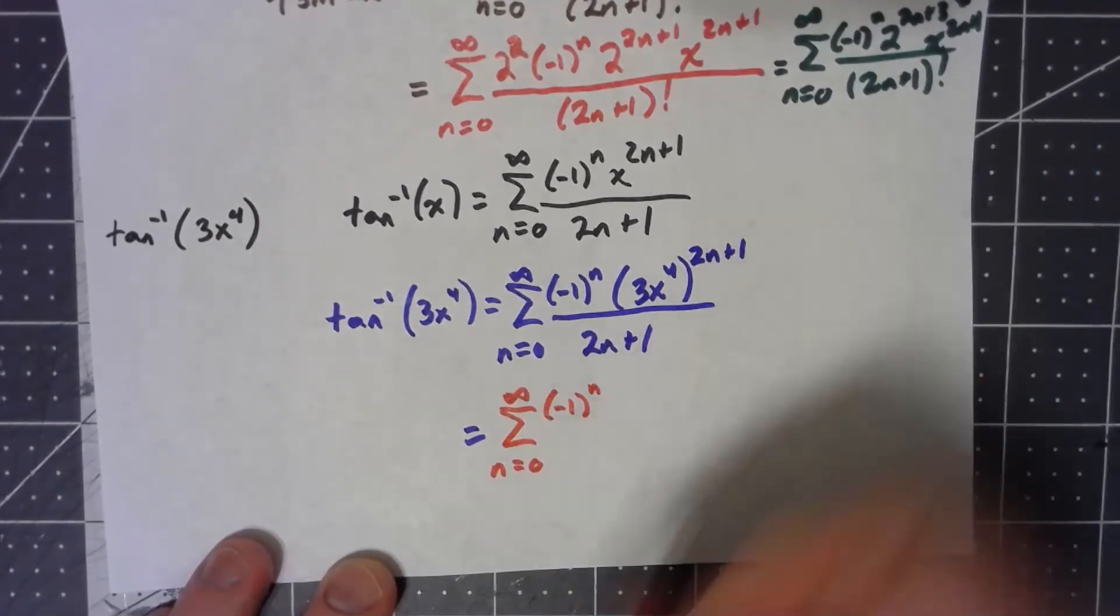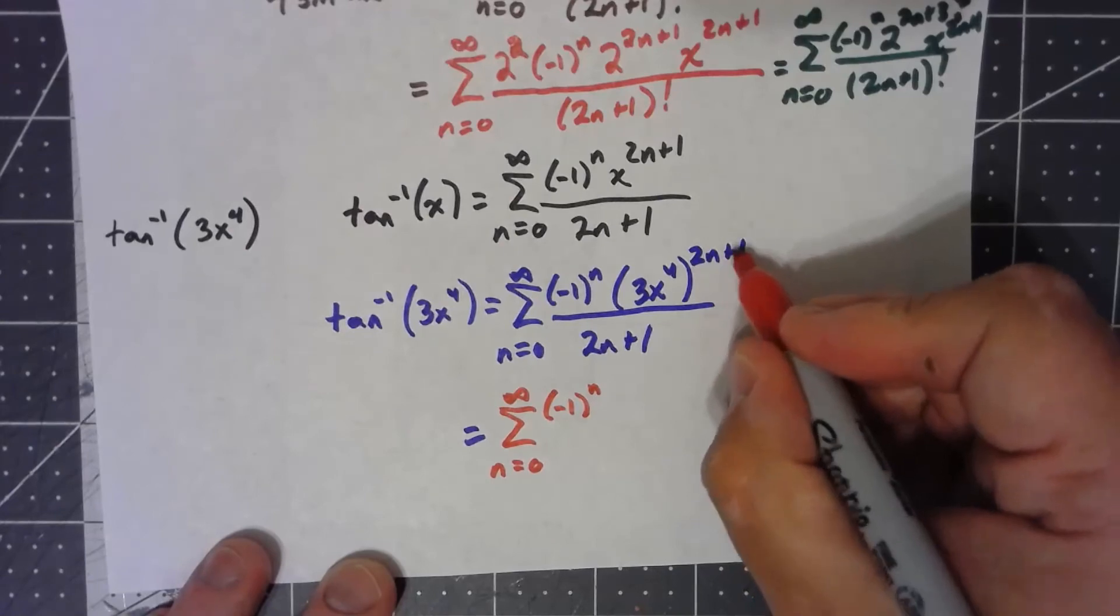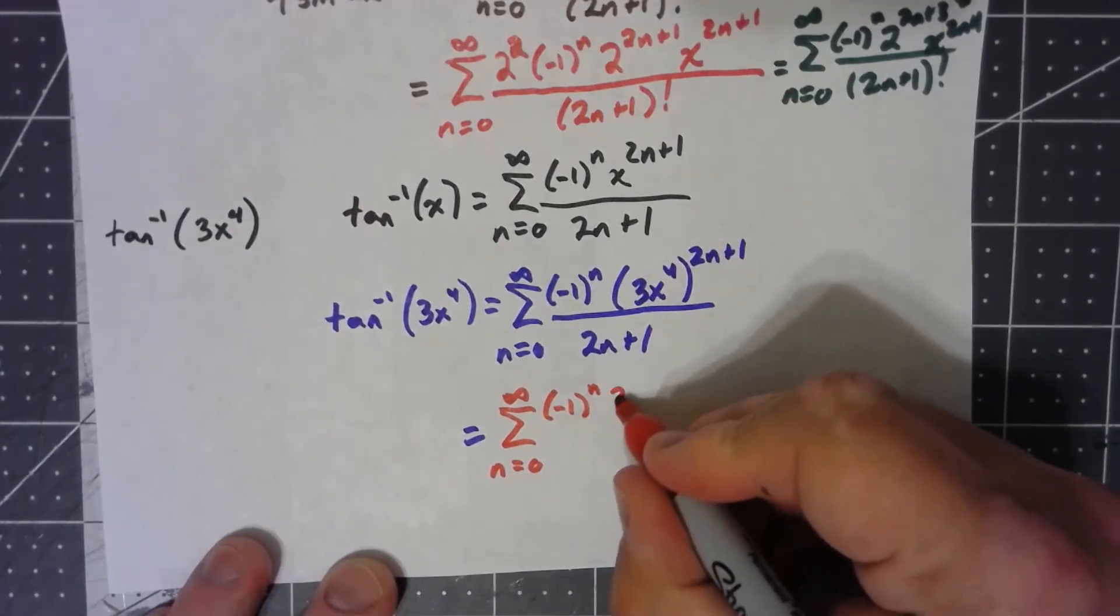Negative 1 to the n there's not much to do with. Just like we've been doing, I can take that power to each part. So I've got a 3 to the 2n plus 1